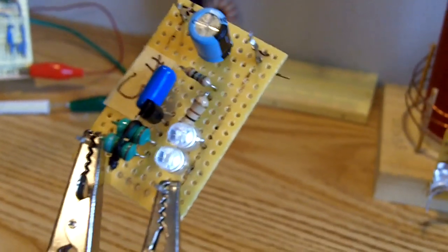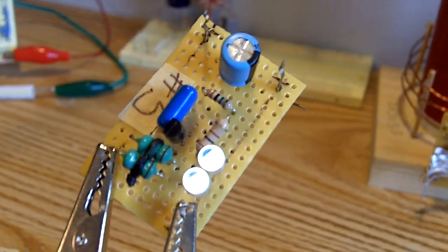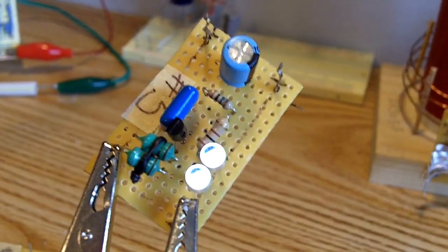By the way, these blocking oscillators are only drawing about somewhere between 30 and 40 microamps. They draw very little current.